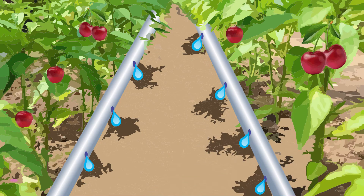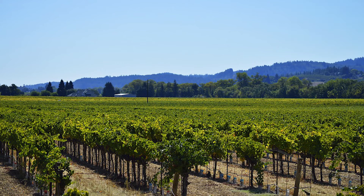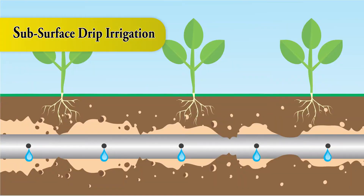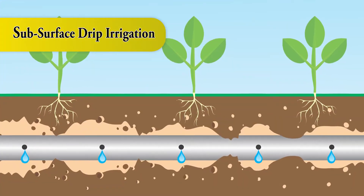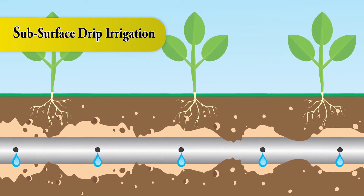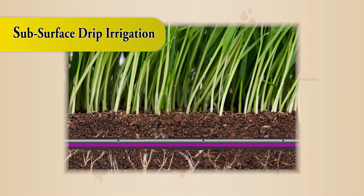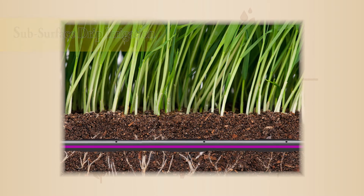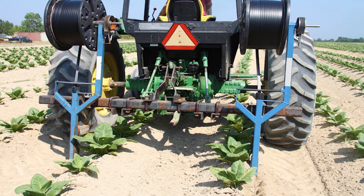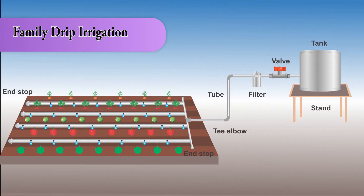Surface drip irrigation is widely used to irrigate perennial crops such as trees and vines, and annual row crops. Subsurface drip irrigation uses 20 to 27 inches of emitter spacing and a slightly thicker wall drip line of 13 to 15 mil, injected 18 inches to 14 inches below the surface. These systems are permanent, making design and installation critical to ensure longevity.